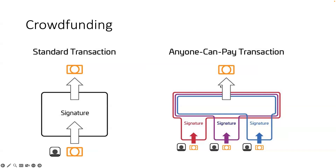Alice creates a transaction with her own input and one output that pays to some escrow address with an amount of, say, 100 bitcoin. She signs it with her own input using SIGHASH_ALL combined with ANYONE_CAN_PAY. She contributes, say, 10 bitcoin. The output pays to the escrow for the lighthouse project with a target of 100 bitcoin. Now she has this partial transaction — can anyone tell me: is this a valid Bitcoin transaction? Can she just broadcast it?